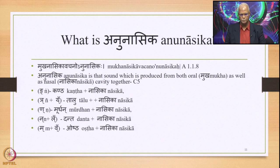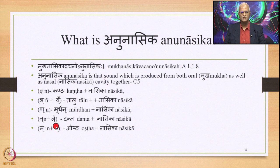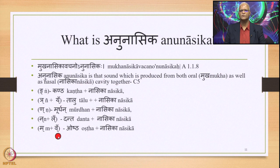Amongst the Anunasika consonants, the five N N N N M are the ones mentioned as the right-hand side environment by the word Anunasika. These five plus the other three are mentioned as the substitute. This is primarily because the positions these sounds may occupy may not match with the environments required for this rule.